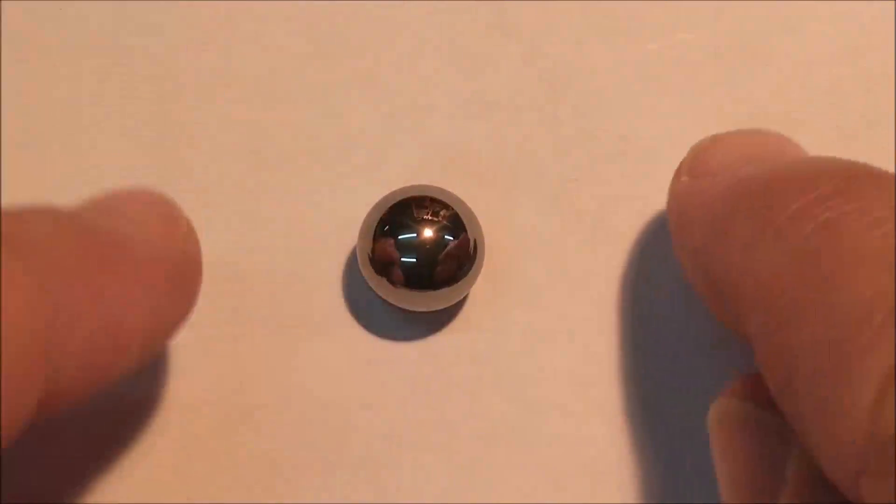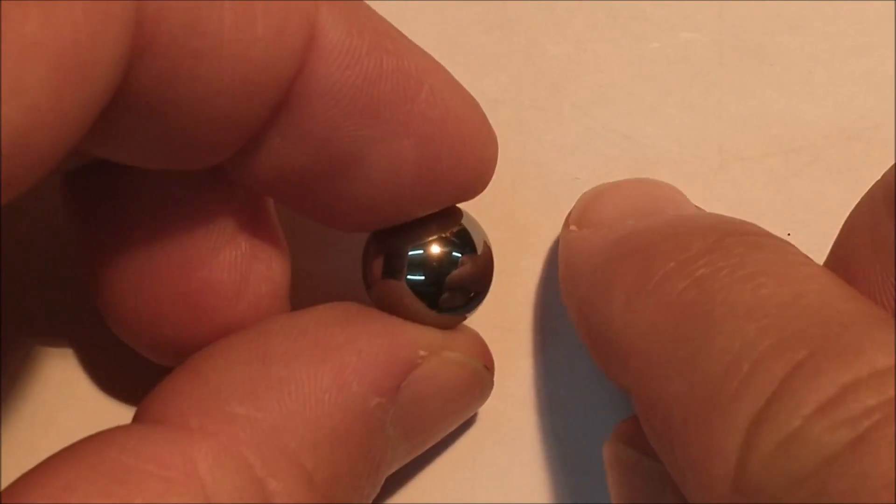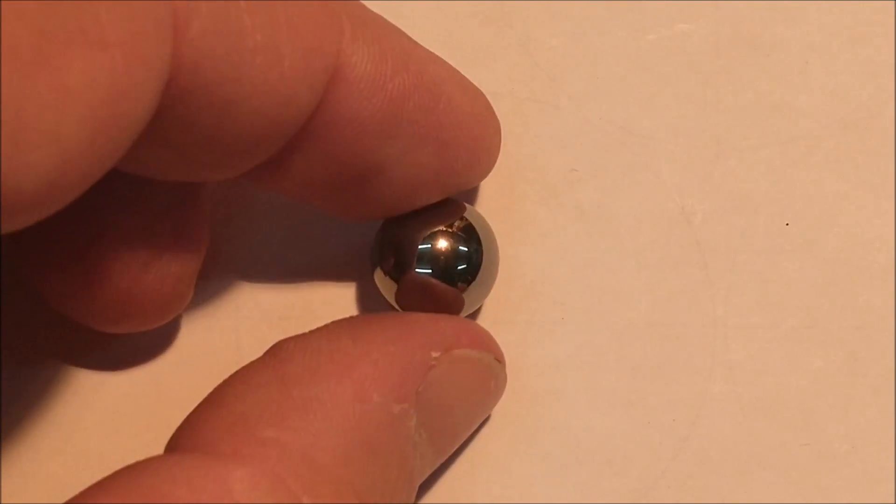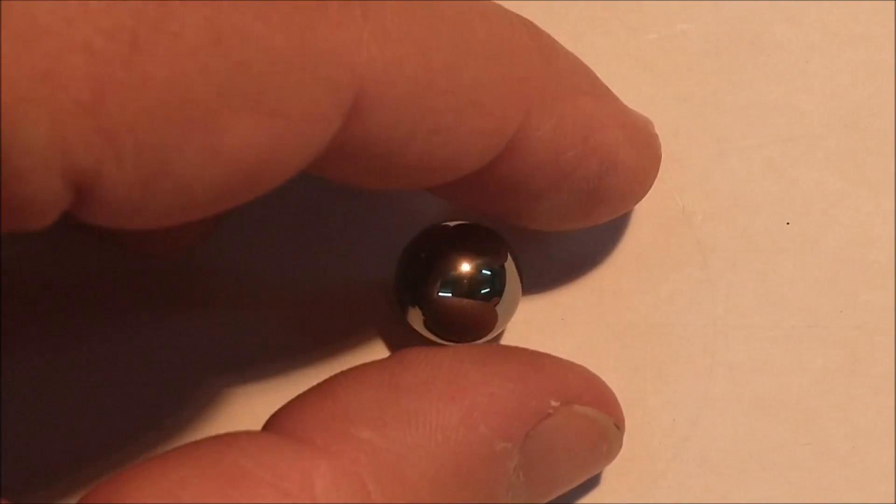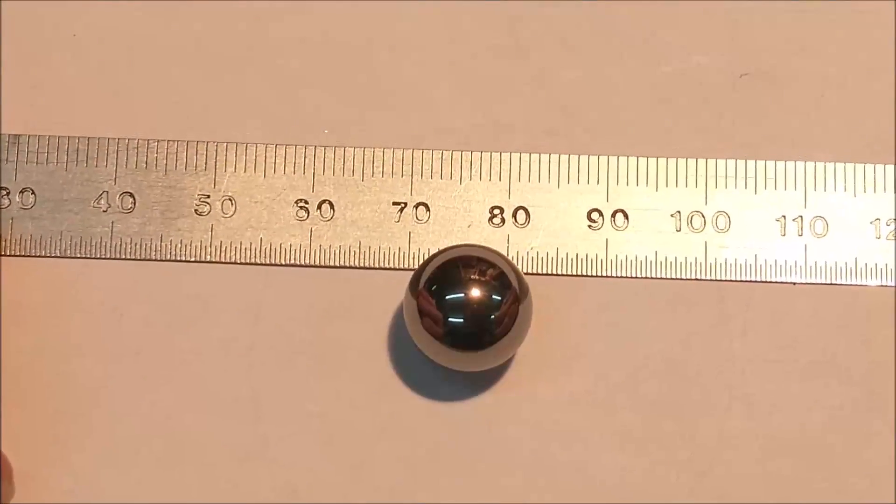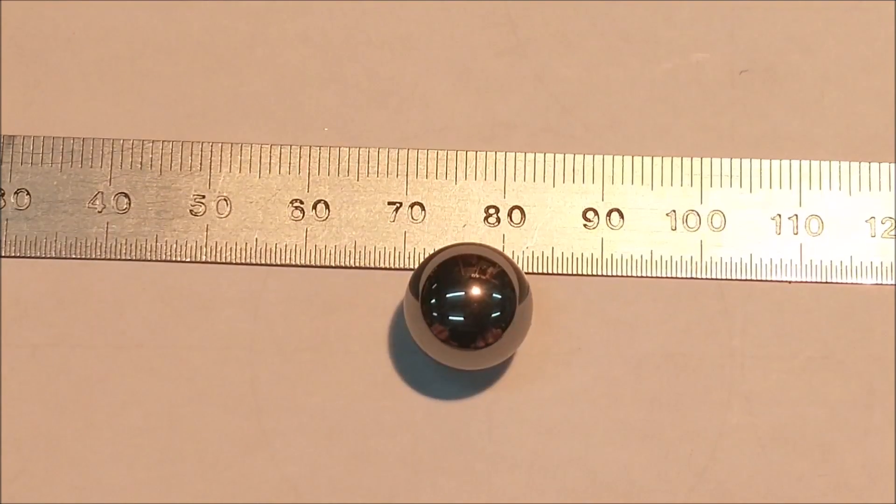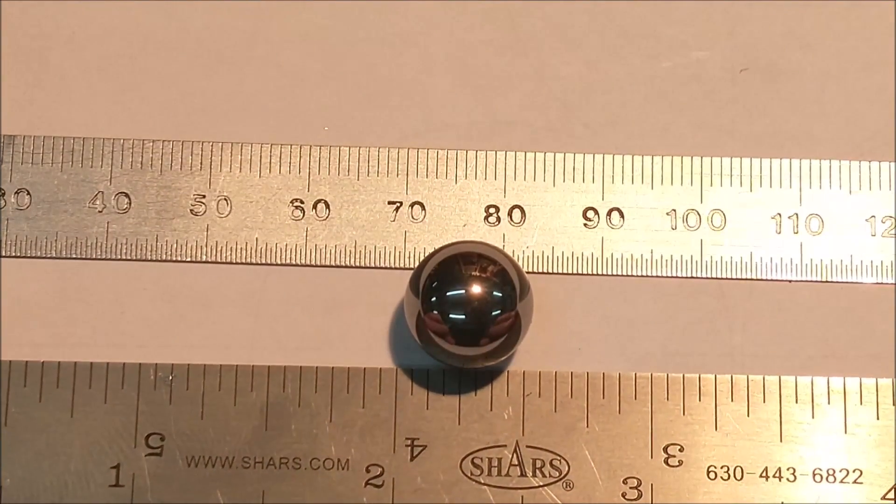Hey guys, Joe Pye here at Advanced Innovations. Welcome back to the shop. Today's project is to make a bunch of little miniature cannonballs for this cannon that I'm building. They're going to be half inch in diameter, which is approximately 12.7 millimeters—that's a 50 caliber.